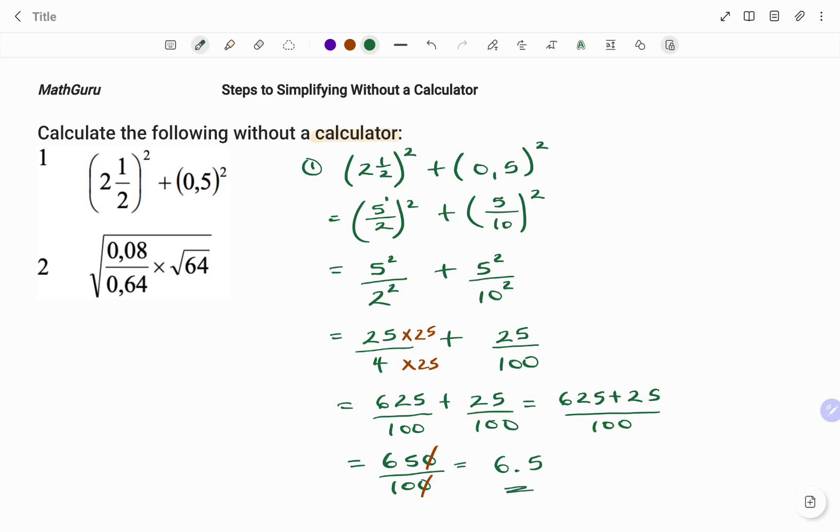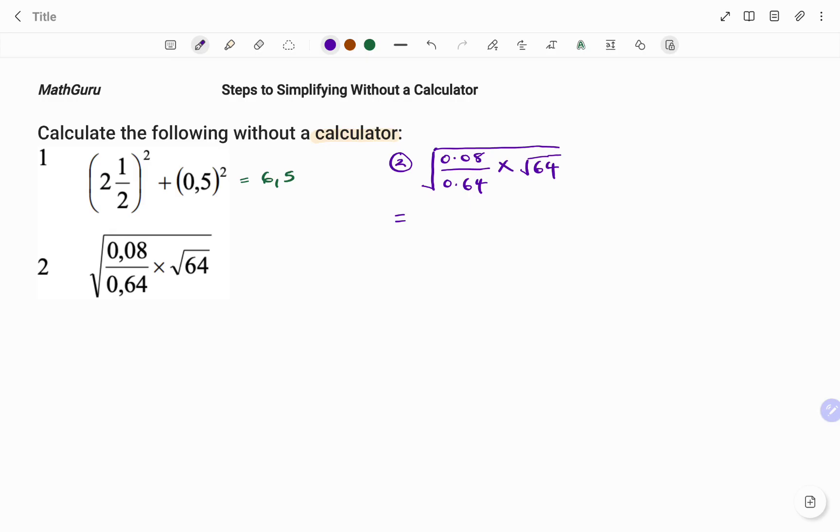Let's look at the second example. I have, under the root sign, 0.08 divided by 0.64, times root of 64.